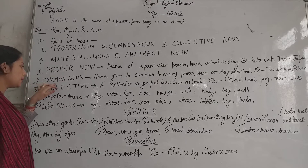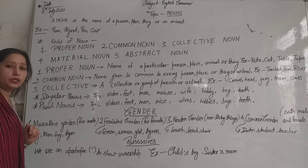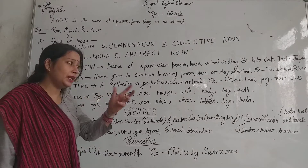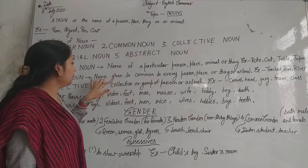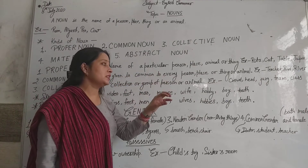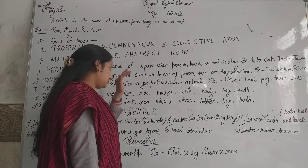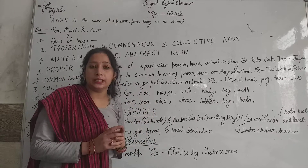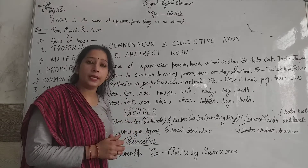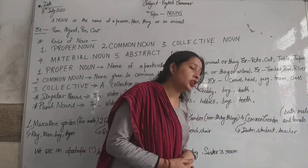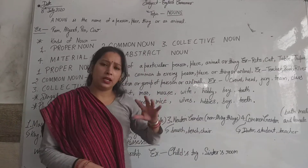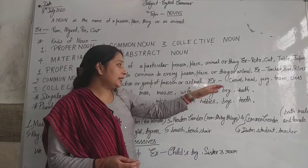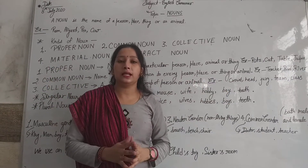Now we move to the second topic: common nouns. A common noun is a name given in common to every person, place, animal, or thing. For example, 'teacher' — we call all teachers by that name. They are common names shared across a whole category.